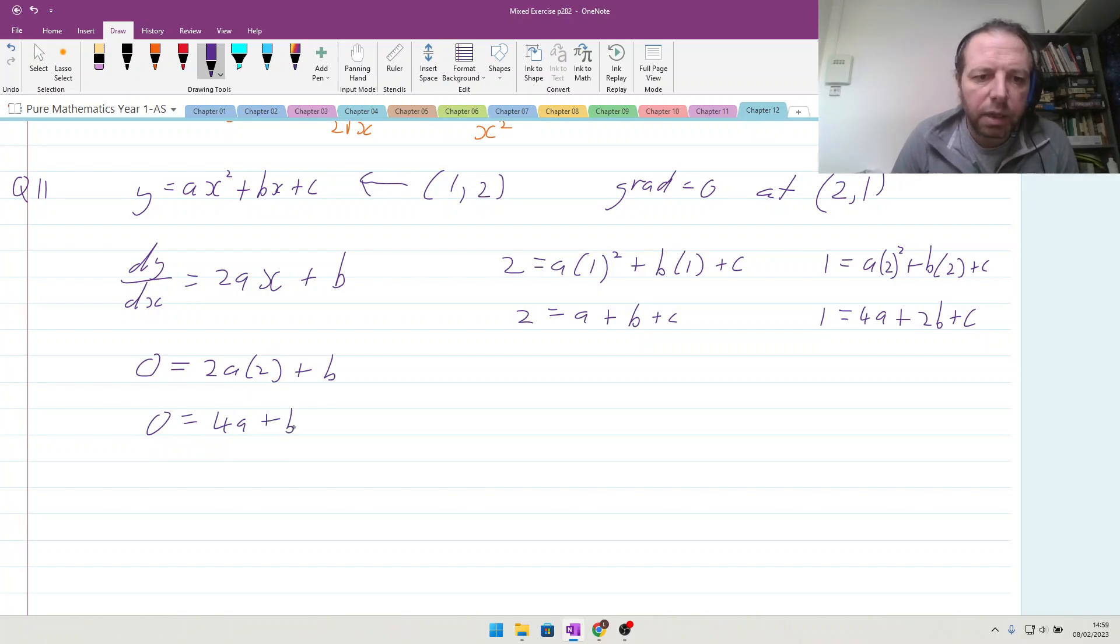So we end up with 1 equals 4a plus 2b plus c, and coming back here, tidying up this differentiated question, we end up with 0 equals 4a plus b. So with all of that we can start messing around because we have three equations now and we have three unknowns a, b, and c and they're all separately connected. So I am going to take this first equation here and I am going to say that minus 4a is equal to b, and I am going to use that to substitute it into this equation. So anywhere that I see b I'm putting in minus 4a. So I've got 2 equals a minus 4a plus c, so 2 equals minus 3a plus c. In the same way I'm going to rearrange that as well and I'm going to get 2 plus 3a equals c.